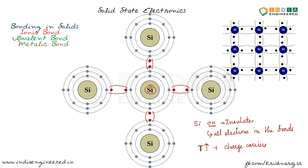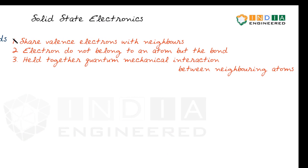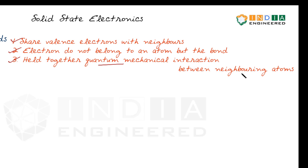To summarize covalent bonds: valence electrons are shared with neighboring atoms, so electrons do not belong to a single atom but belong to the bond. The crystal structure is held together by quantum mechanical interaction between neighboring atoms.